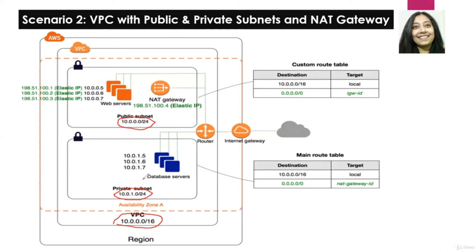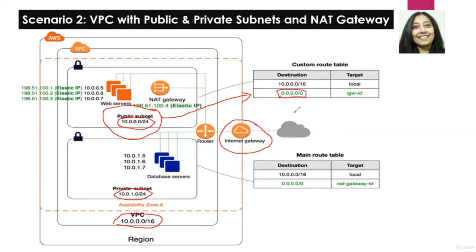After creating our two subnets, we will add an internet gateway to our VPC — provision it and attach it. After provisioning the internet gateway, we will associate it to the subnet we want to be publicly available. We will modify its route table to ensure all non-local traffic (0.0.0.0/0) is directed to our internet gateway, which is what makes this subnet a public subnet.